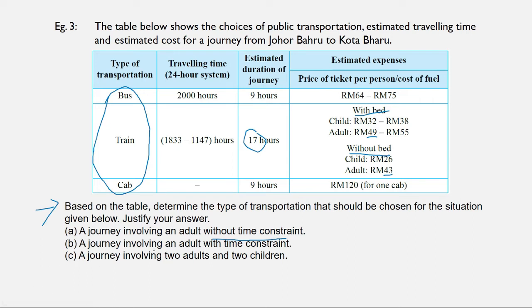Part B: a journey involving an adult with time constraint — he is rushing, so he cannot take the train. We have to decide between bus and cab. For an adult, the bus ticket price is RM64 to RM75, whereas the cab costs RM120, which is much more expensive. Therefore, taking a bus is the best choice because the journey duration is shorter than the train, it is more economical than the cab, and for safety purposes it is not wise for an individual to take a cab for a long journey.